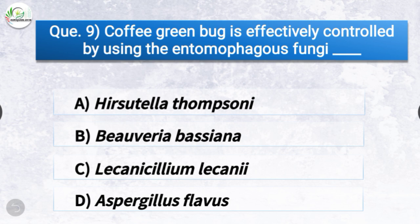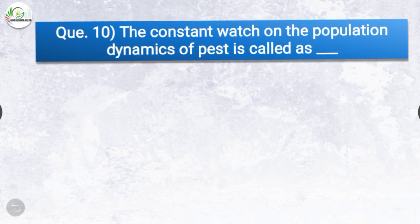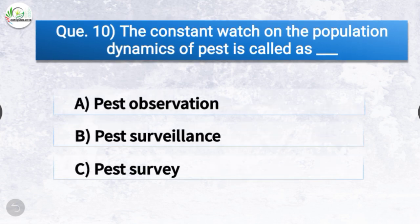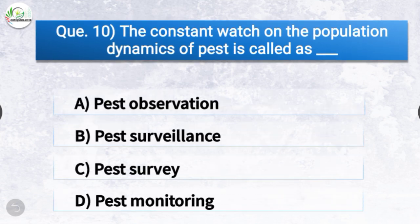Question number nine: Coffee green bug is effectively controlled by using the entomopathogenic fungi which is? The options are Hirsutella thompsonii, Beauveria bassiana, Lecanicillium lecanii, or Aspergillus flavus. The correct answer is option C, Lecanicillium lecanii — coffee green bug is effectively controlled by using Lecanicillium lecanii.